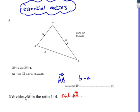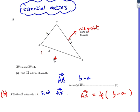so it's going to be b minus a. Okay, that's the first one. The second one says X divides AB in the ratio 1 to 4, find AX, so I need to start at A and finish at X, and I know that X is in the ratio 1 to 4 from A to B. Okay,